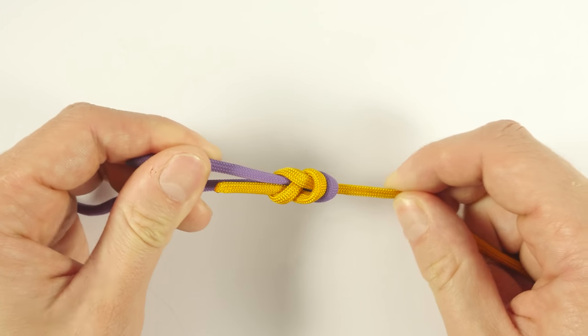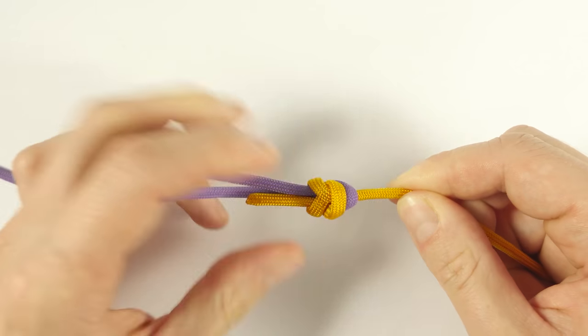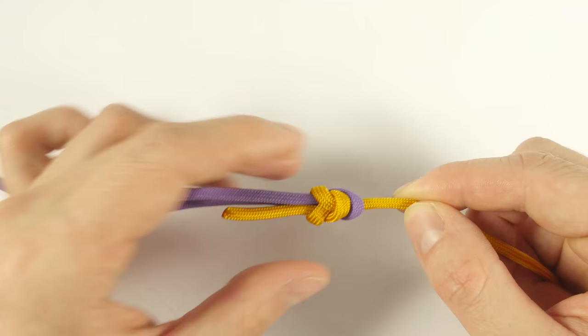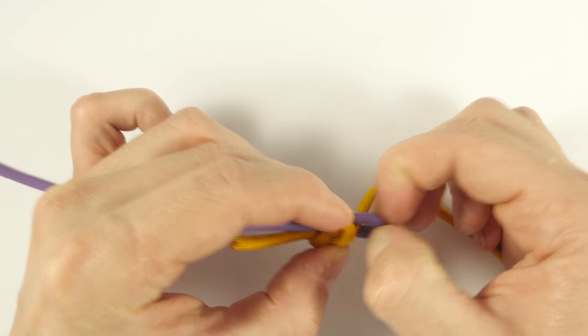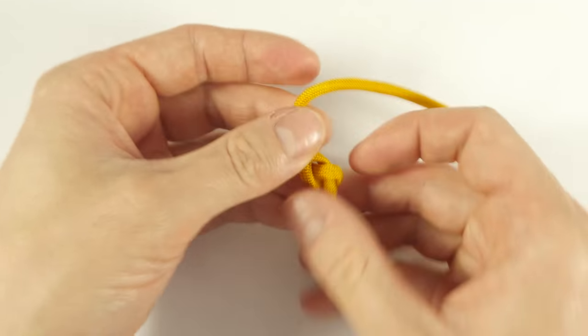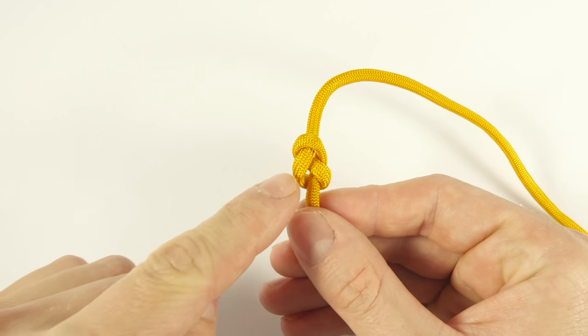Tighten it up and you have a secure bend. Now if you remove the bight, you are left with a figure 8 knot.